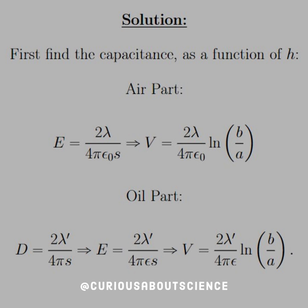Taking the integral of this electric field, we can find the potential is equal to 2 lambda over 4 pi epsilon naught ln b divided by a. For the oil part, we need to find the electric displacement via Gauss's law, which is equal to 2 lambda prime over 4 pi s, then divide through by the dielectric constants and permittivity. We get E equal to 2 lambda prime over 4 pi epsilon s. Again, with the integral, we get the potential is equal to 2 lambda prime over 4 pi epsilon ln of b divided by a.